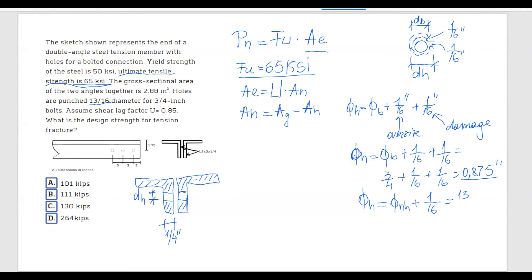And this is going to be equal to 13 over 16. And we have to add only 1 over 16 because this is the nominal diameter of the hole without taking into consideration the damage around it. So we're going to add the damage which is 1 over 16 of an inch. And this should be equal to the same thing: 0.875 inches.